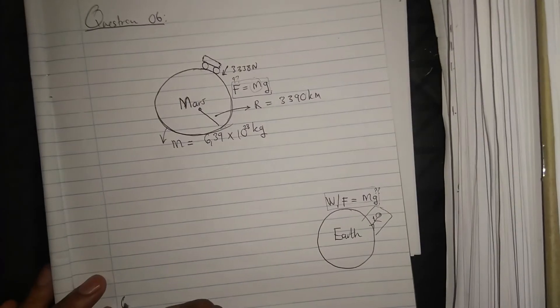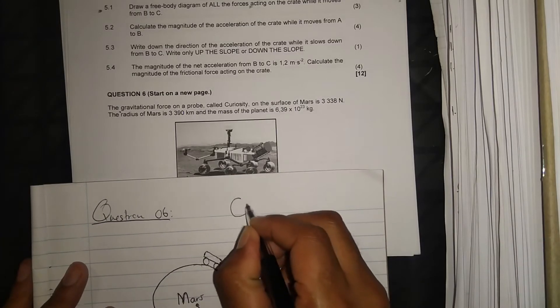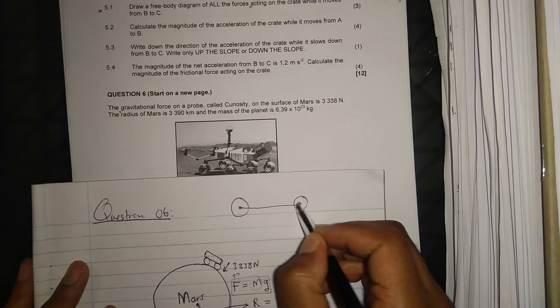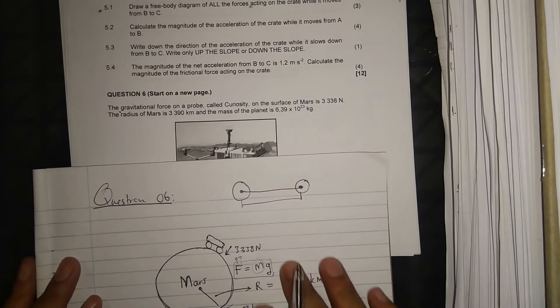Question 6.1: State Newton's law of universal gravitation in words. Every particle in the universe attracts every other particle with a gravitational force that is directly proportional to the product of their masses and inversely proportional to the square of the distance between their centers. It's important to note that when calculating gravitational force between any two objects, you use the distance from center to center.